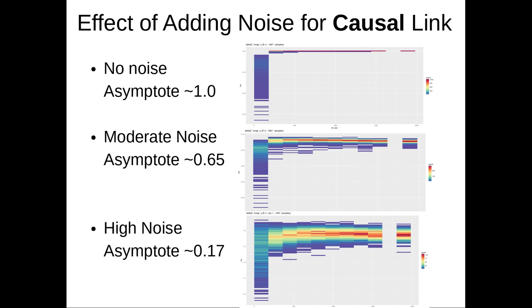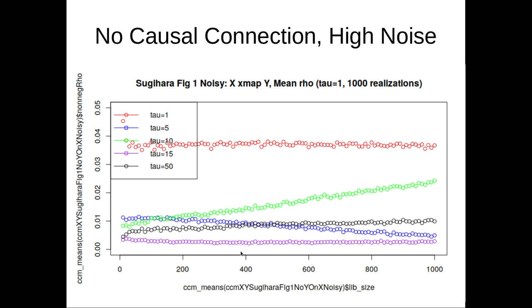Here's a causal link with no noise at all. You can see it's very tight, it converges. Here's with moderate noise with an asymptote of 0.65. And you notice here with high noise, the asymptote is 0.17. Adding a large amount of noise successively brings down what the value eventually goes to. It still looks causal plausibly, but it's been brought down a lot in terms of its ultimate value.